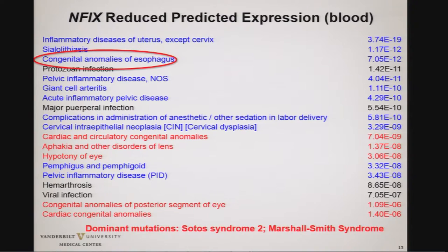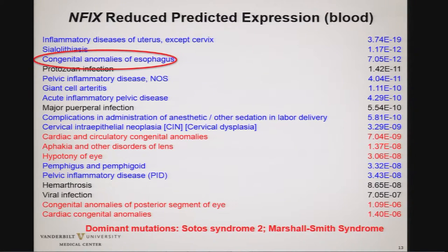Congenital anomalies have been described, but I didn't see anywhere that congenital anomalies of the esophagus have been described — yet they're highly significantly associated. It wouldn't be surprising in some newly diagnosed kids with this disease to see congenital anomalies of the esophagus, which might make it harder to recognize that this could be one of the autosomal dominant conditions associated with this gene.